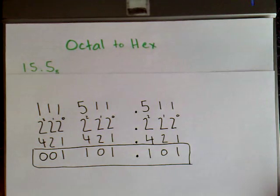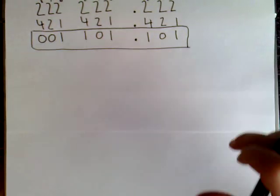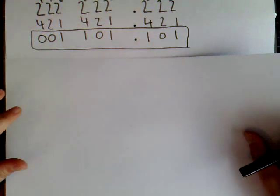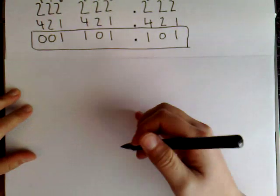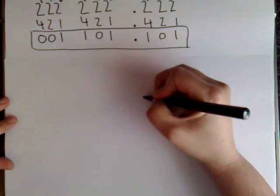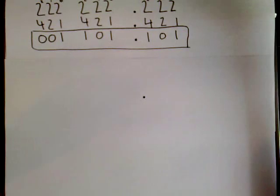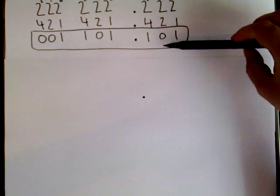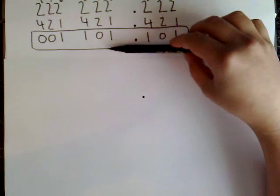And now I just need to take it from binary into hex. So to do that, I start at the decimal again. But if you look here, there are only 3 digits in each group.